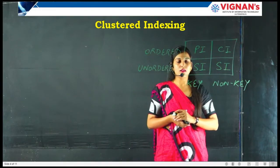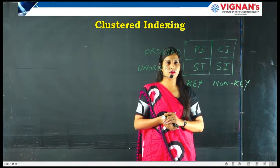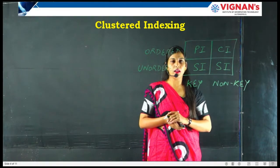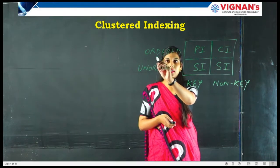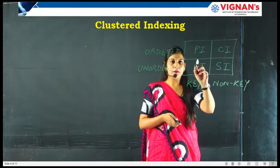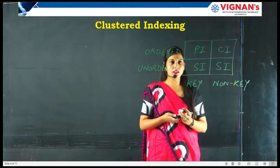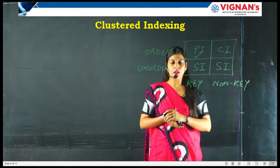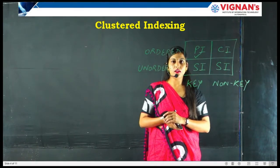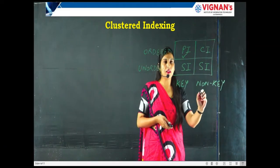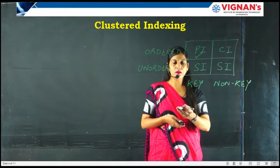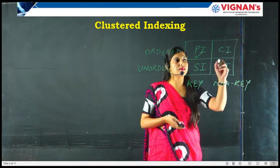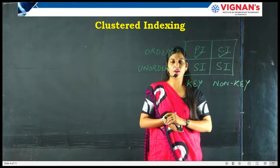In the index matrix we have ordered, unordered, key, and non-key types of data. When we have data which is ordered and key — meaning data which is sorted and has unique values — in that case we define primary indexing. If the data file has ordered data but the data is non-key, meaning sorted but not having unique values, then clustered indexing is defined on the database file.